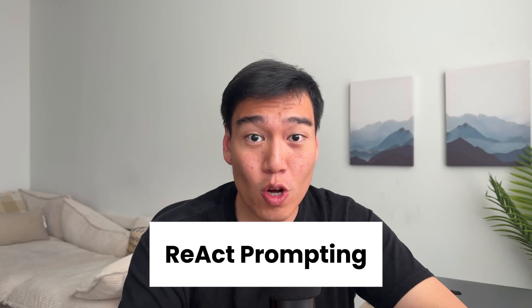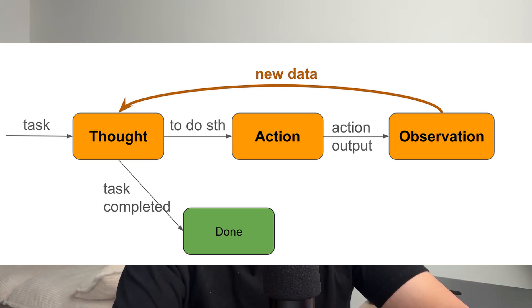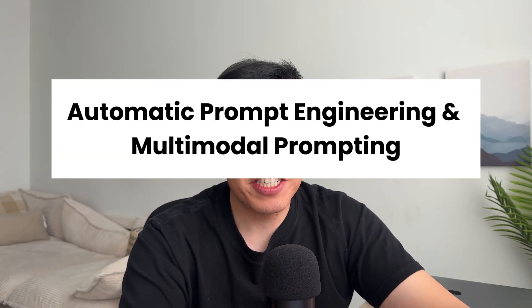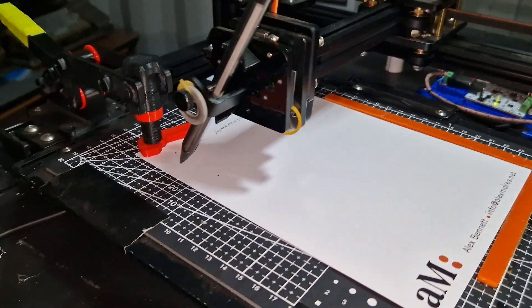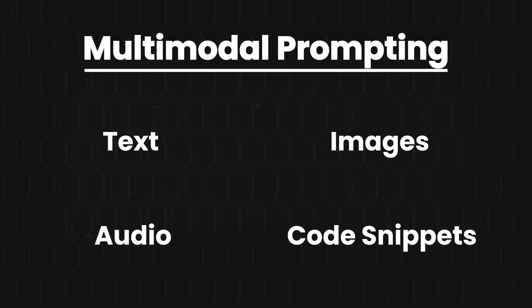Then we have Reason and Act prompting, also known as ReAct. Like the name suggests, it combines reasoning and action. The AI first reasons about a problem and comes up with a plan, then takes action — like searching the web to get more information — and uses that new information to improve the answer. This is basically how humans operate in the real world. Lastly, automatic prompt engineering is when you have the AI help create its own prompts — essentially writing instructions to itself. And multimodal prompting means you can mix text with images, audio, and even code snippets to give more context, which is especially helpful when your task involves different kinds of data or visual information.